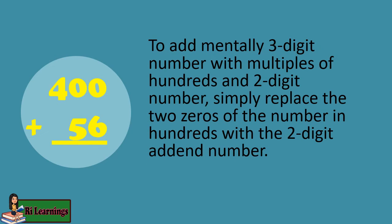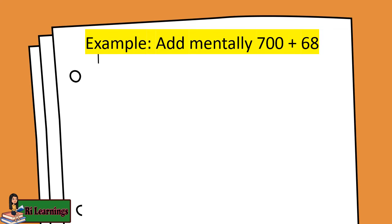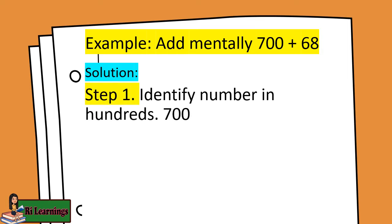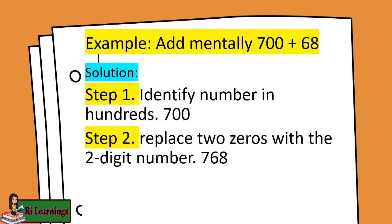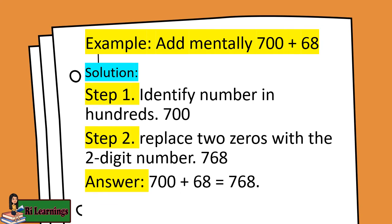To add mentally a three-digit number with multiples of hundreds and a two-digit number, simply replace the two zeros of the hundreds number with the two-digit addend number. Example: add mentally 700 plus 68. Step 1: Identify the number in hundreds — 700. Step 2: Replace the two zeros with the two-digit number — 768. Answer: 700 plus 68 equals 768.